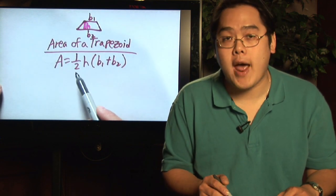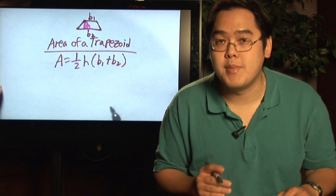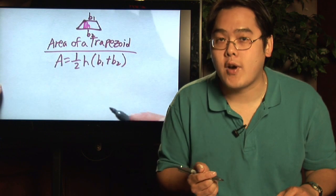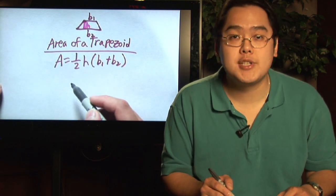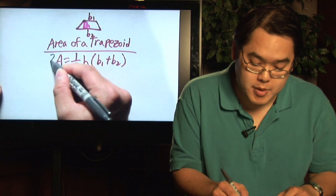First and foremost, notice here you have a fraction, so you want to make things easier. You can always clear the fraction. So go ahead and multiply both sides by the least common denominator, which is 2. So we're going to multiply both sides by 2.